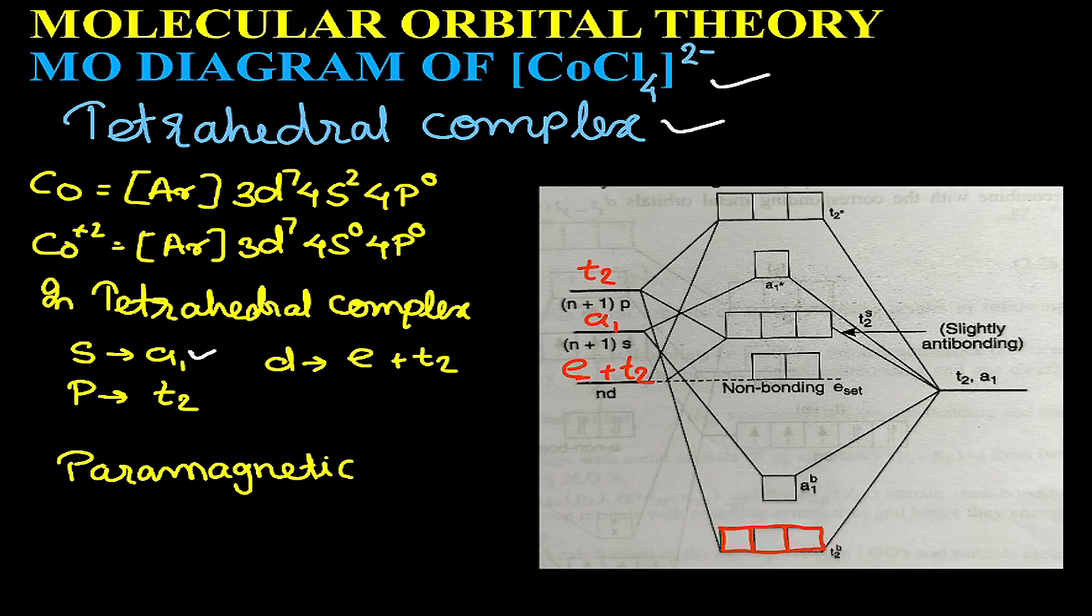S orbital will be assigned symmetry A1, P orbitals are assigned symmetry T2, and D orbitals split into two: dx² - y² and dz² are termed as E, and the remaining three are termed as T2.